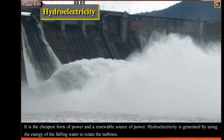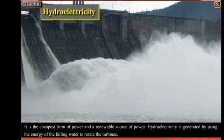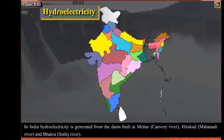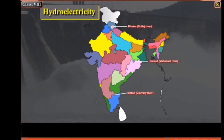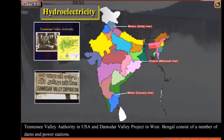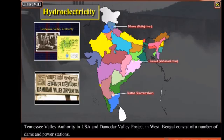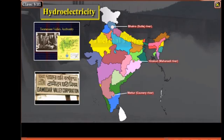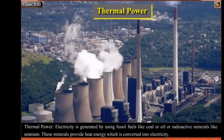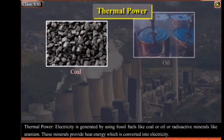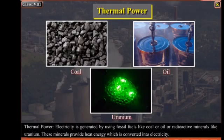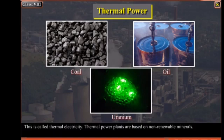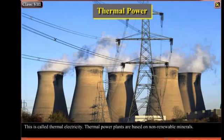Hydroelectricity is generated by using the energy of falling water to rotate the turbines. In India, hydroelectricity is generated from the dams built at Mettur on the Kaveri River, Hirakud on the Mahanadi River, and Bhakra on the Sutlej River. Tennessee Valley Authority in USA and Damodar Valley Project in West Bengal consist of a number of dams and power stations. Thermal Power: Electricity is generated by using fossil fuels like coal or oil, or radioactive minerals like uranium, which provide heat energy converted into electricity. Thermal power plants are based on non-renewable minerals.